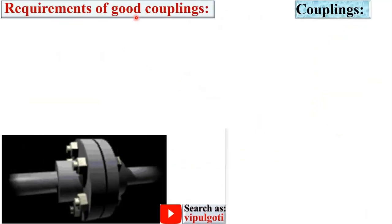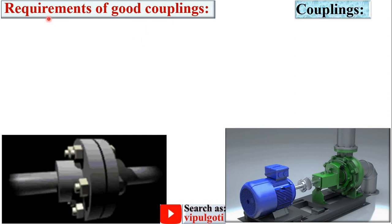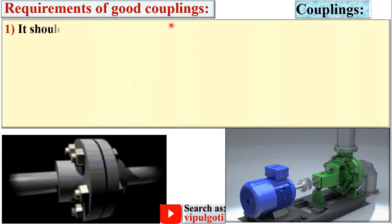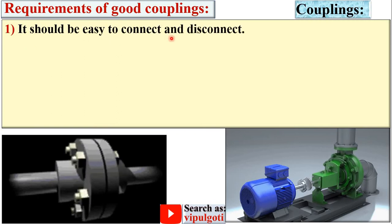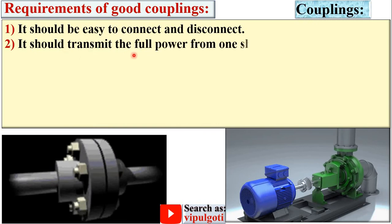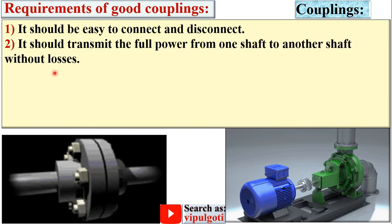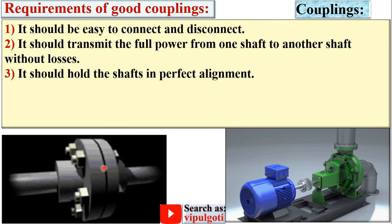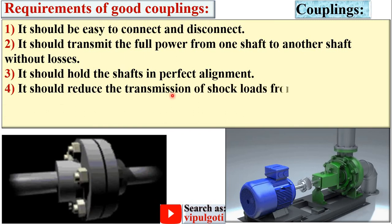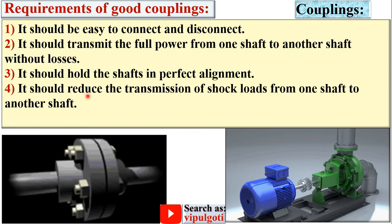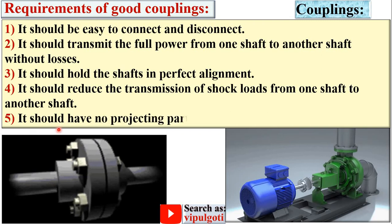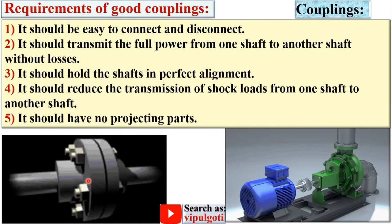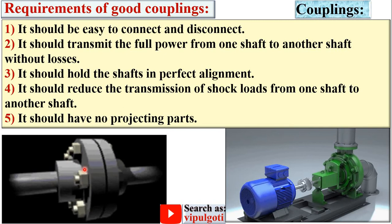Next, the requirements of a good coupling — that means the desired characteristics. First, it should be easy to connect and disconnect. It should transmit the full power from one shaft to another without losses. It should hold the shafts in perfect alignment. It should reduce the transmission of shock loads. And it should have no projecting parts, as projecting parts such as nuts and bolts are dangerous when the coupling is rotating.